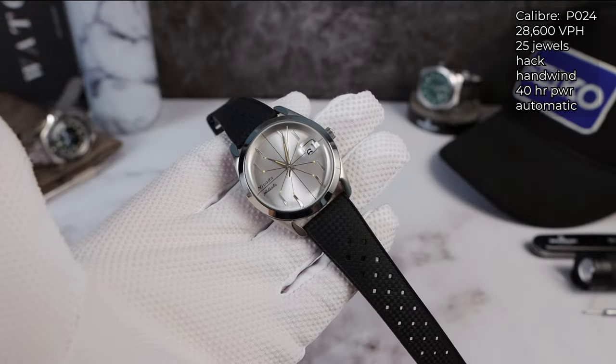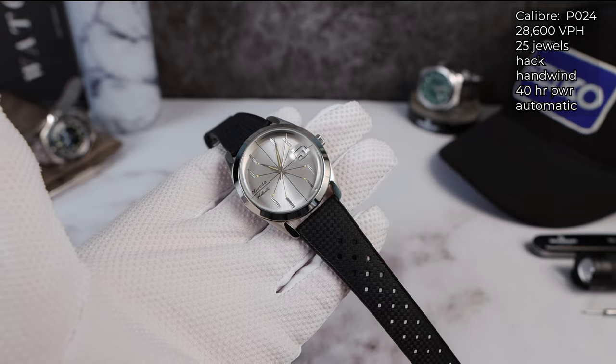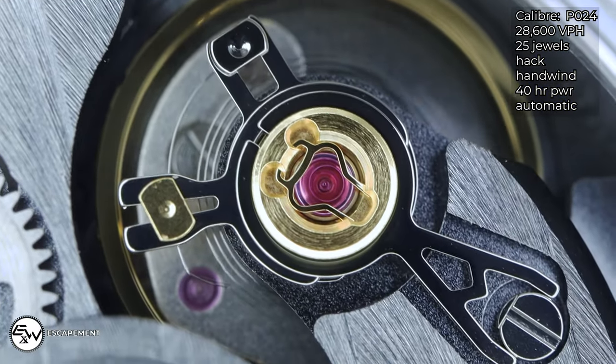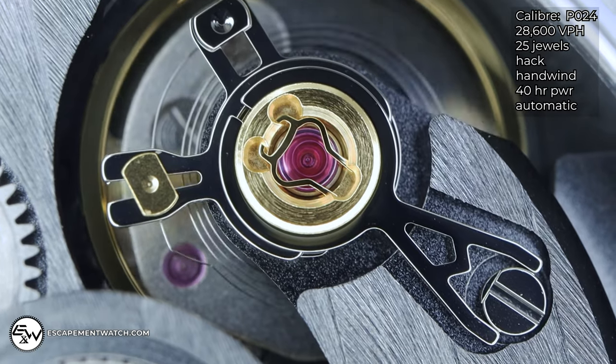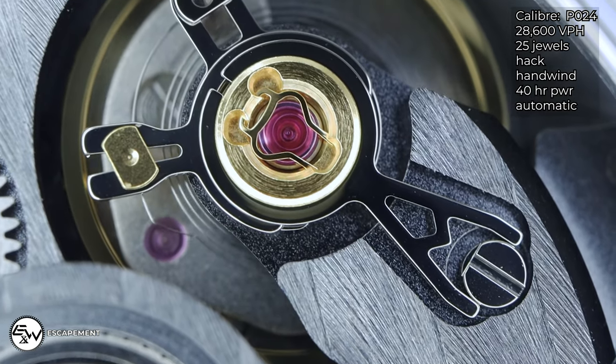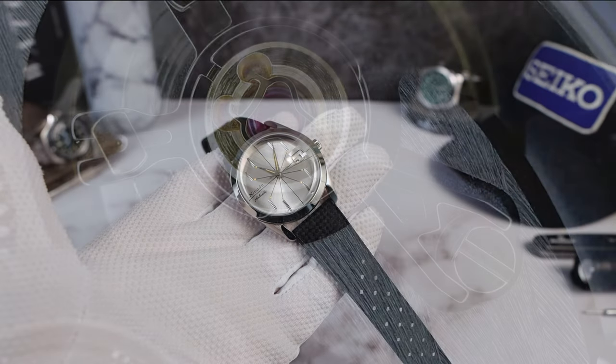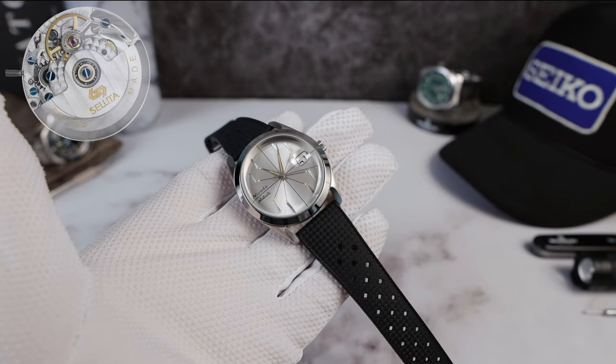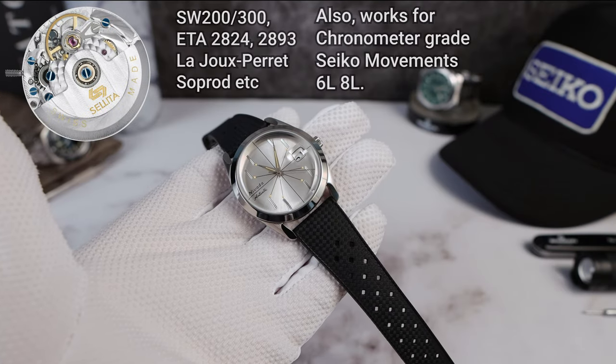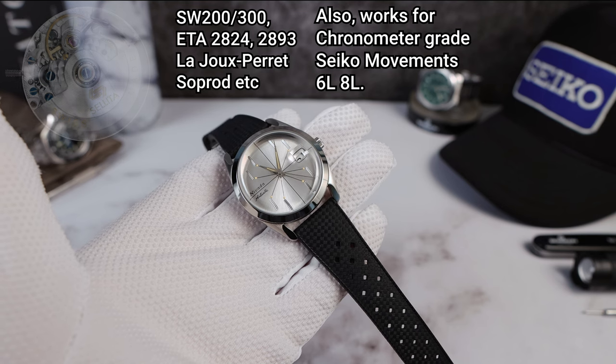This watch has a Soprad P024 which is an ETA 2824, so what I'm showing you today is basically going to be useful for all the entry-level Swiss watches: Solita, SW200, ETA 2836, ETA 2892 - they're all regulated the exact same way.